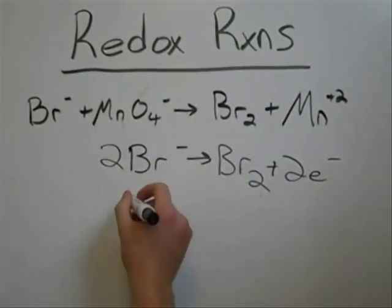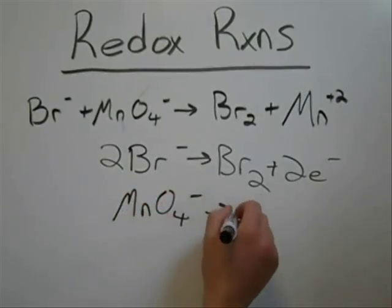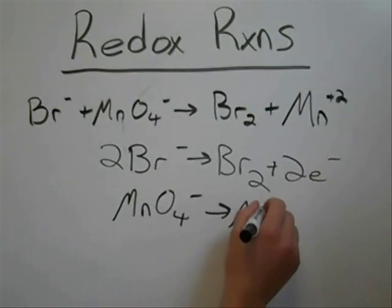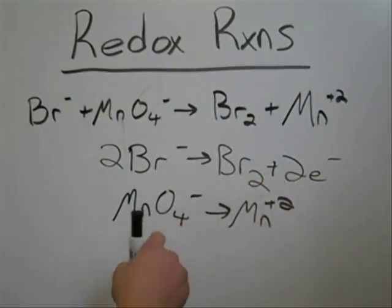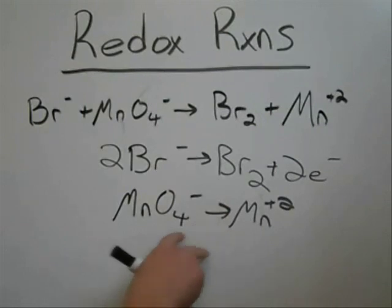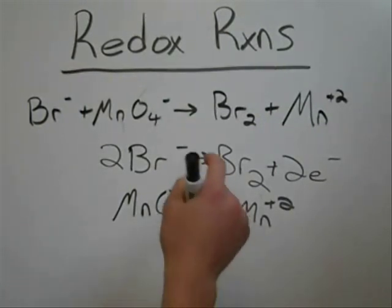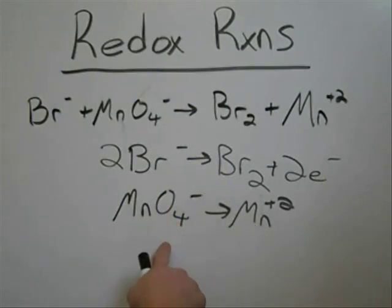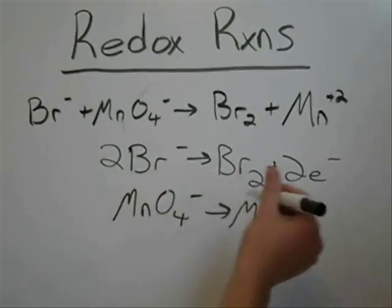Now we go on to the next one. MnO4 minus yields Mn plus two. Now the first thing you want to balance is manganese, and there's only one on each side, so we're set there. Now the next thing you want to balance is all the oxygens, and you do that by adding H2O's. So there's four over here, so we're going to add four H2O's over on our right side.